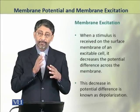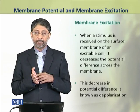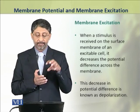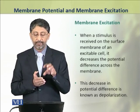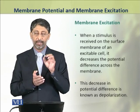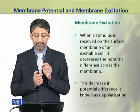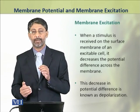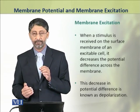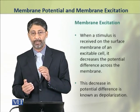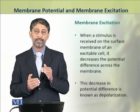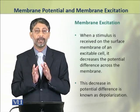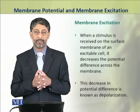How does excitation occur? When a stimulus is received on the surface membrane of an excitable cell, it decreases the potential difference across the membrane. This decrease in potential difference is known as depolarization.